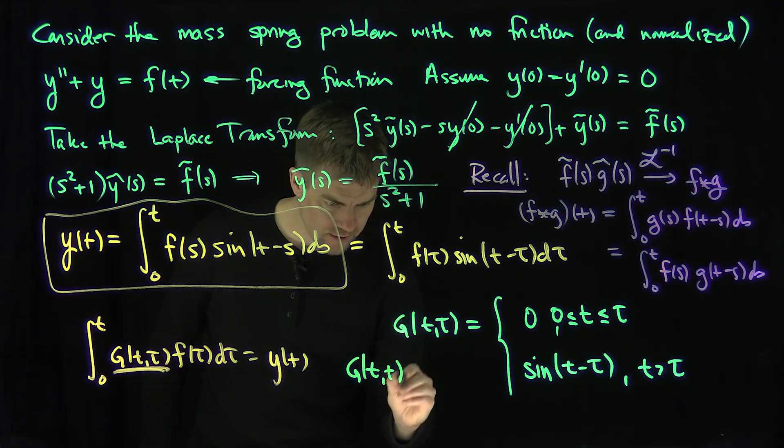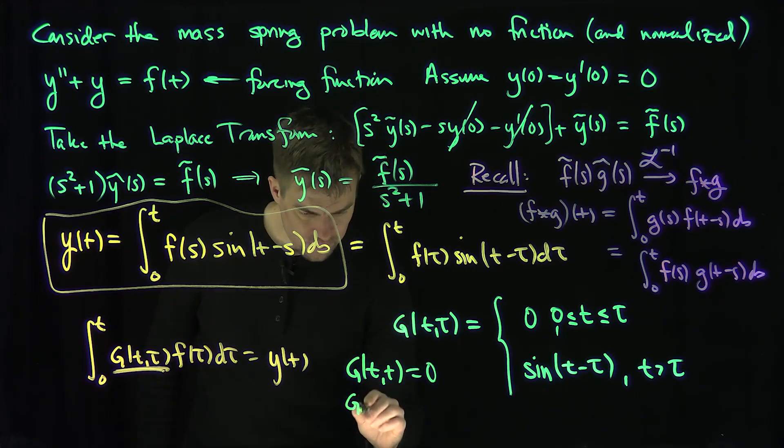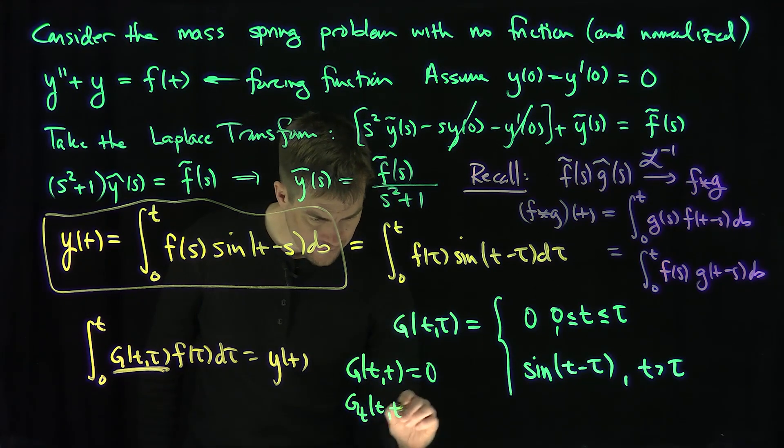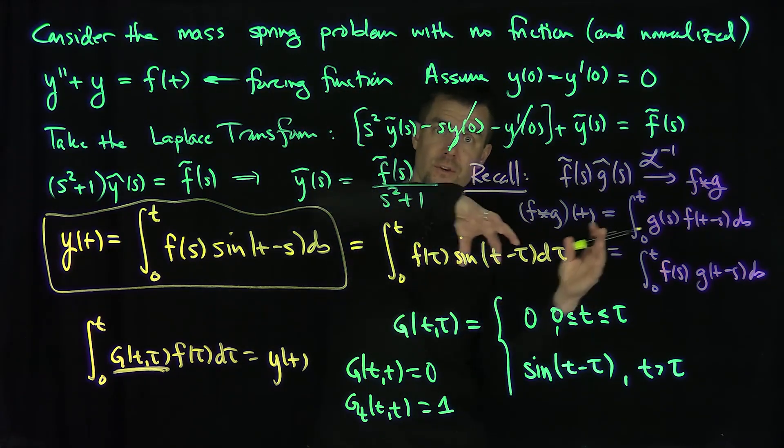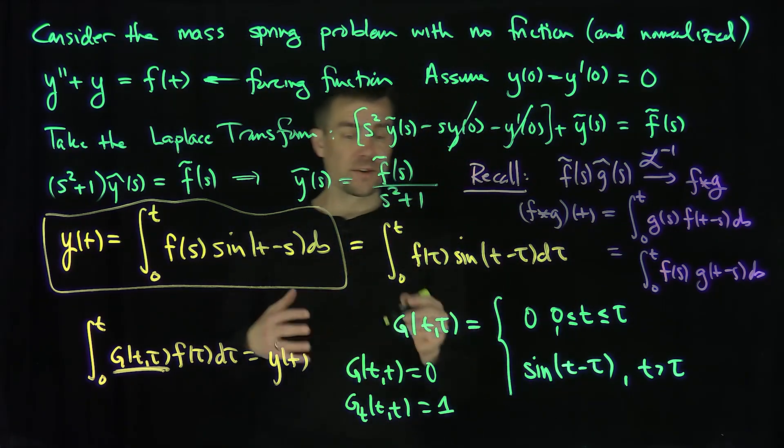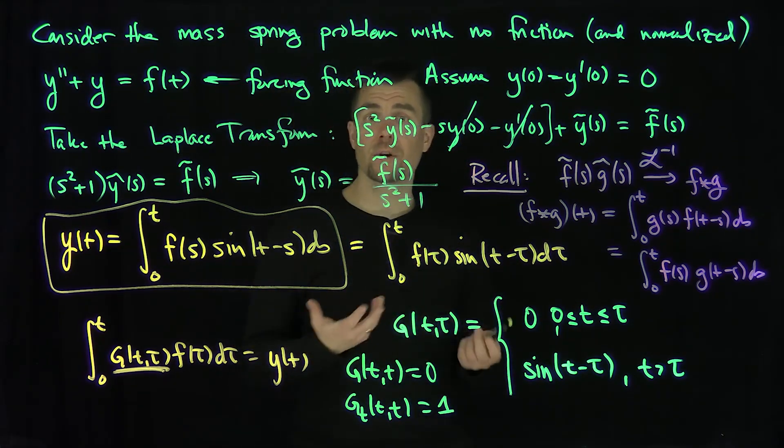So in other words, for this function, it's the case that g of t, t is equal to 0, and gt of t, t is equal to 1, at least in the domain of attraction, the derivative from the right. So this does indeed satisfy the relationships that Green's function has to satisfy.